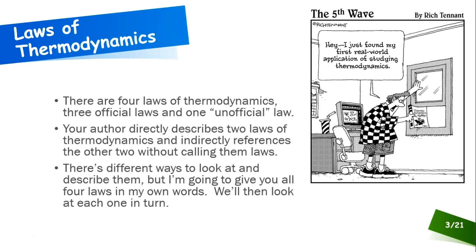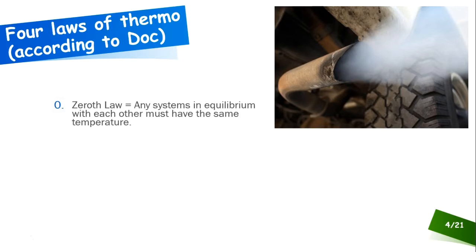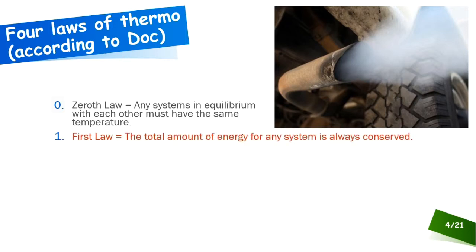Here are the four laws of thermodynamics in my own words, keeping things as simple as possible. The zeroth law says any systems in equilibrium with each other must have the same temperature. The first law says the total amount of energy for any system is always conserved — this is the conservation of energy principle.